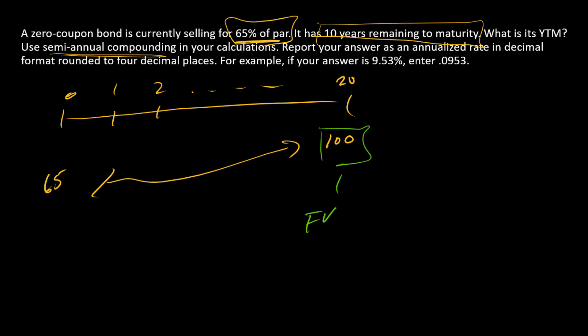We'll make $100 the FV because it is the final cash flow. It's going to be positive because the bondholder will receive it. We'll make 65 our PV, and if the bondholder receives the $100, the bondholder is going to pay $65 for the bond, so we'll make that negative.